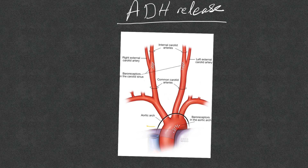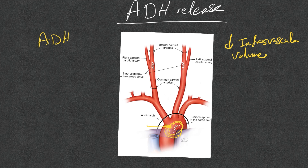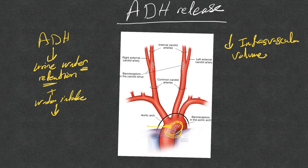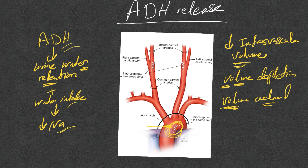Another major trigger of ADH release — beyond tonicity — is intravascular volume. If intravascular volume or effective circulatory volume decreases, baroreceptors sense the drop in pressure and signal the posterior pituitary to release ADH. ADH then causes urine water retention through the kidney. With continued water intake, this leads to decreased sodium concentration. Volume depletion from vomiting, diarrhea, or third-spacing, as well as volume overload states like heart failure, nephrotic syndrome, or cirrhosis, can all trigger this response.